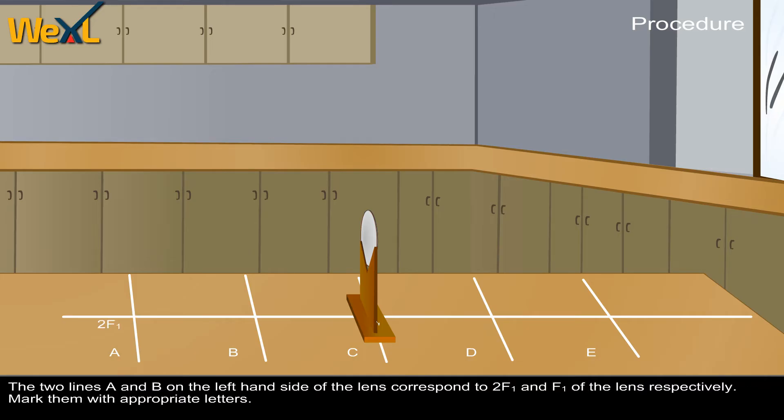The two lines A and B on the left-hand side of the lens correspond to 2F1 and F1 of the lens respectively. Mark them with appropriate letters.